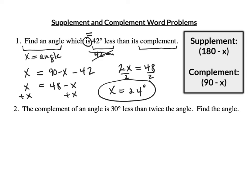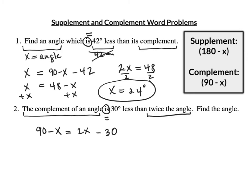Number 2: The complement of an angle is 30 less than twice the angle. There's that word "is" again — is means equal. On this side I've got the complement of an angle, which is 90 minus x. It equals — now on the other side — 30 less means I'm going to subtract 30 from something, so it's minus 30. I'm subtracting 30 from twice the angle. The angle is x, so twice the angle would be 2x. Solve that and you'll know the angle.